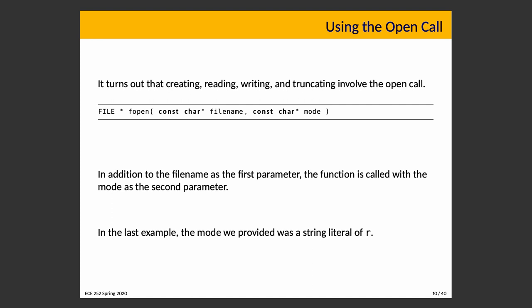Let's look at the fopen system call. All operations — creating, reading, writing, and truncating — involve the open call, since we must have the file open to perform the operation. When opening a file, we specify the mode, which declares our intentions: do we intend to read, write, or truncate? Writing requires the file to be opened in a mode that supports writing; otherwise the operation will be denied. Similarly, if we don't have rights to write to a file, trying to open it in write mode will be unsuccessful.